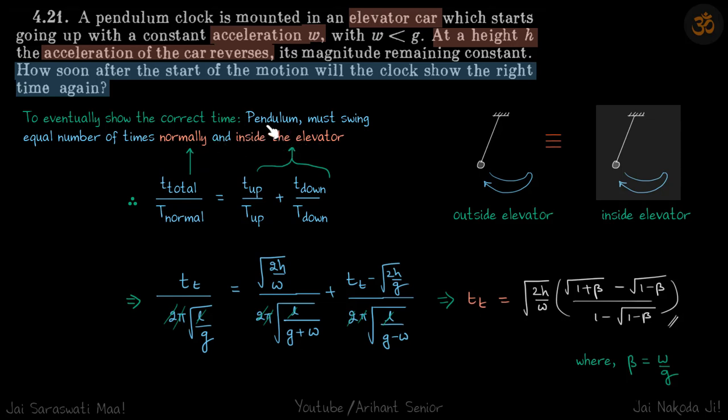The number of times the pendulum swings is time divided by time period of the pendulum. So if total time, which we need to find, is T total, then normally outside the elevator the pendulum will swing T total by T normal. That equals the number of times the pendulum swings inside the elevator.